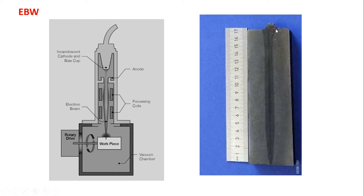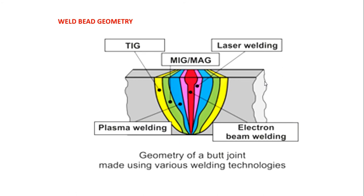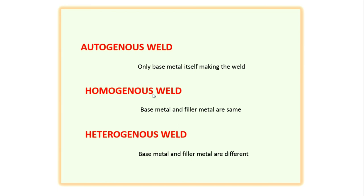The crosswise view of the workpiece shows very small width and high depth of penetration — this is what we expect from a good welding machine, giving maximum strength. In the bead geometry comparison, remember the thumb rule: wider bead width means a weaker joint. So the narrower the bead, the better. Electron beam gives the narrowest bead, followed by laser, then plasma, MIG/MAG, and TIG which is the widest and weakest.